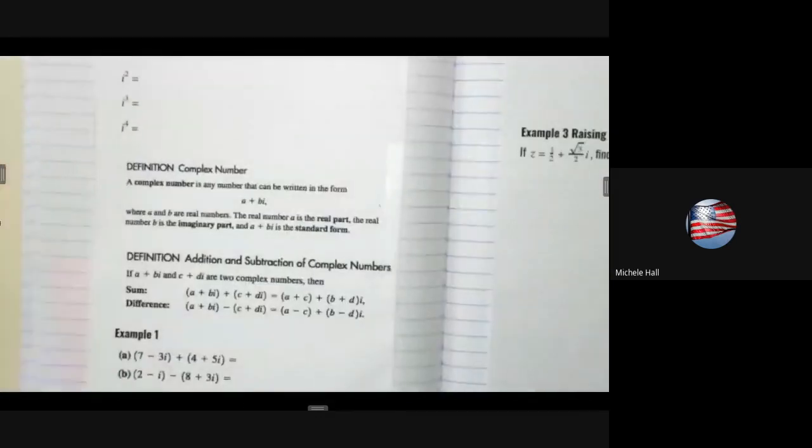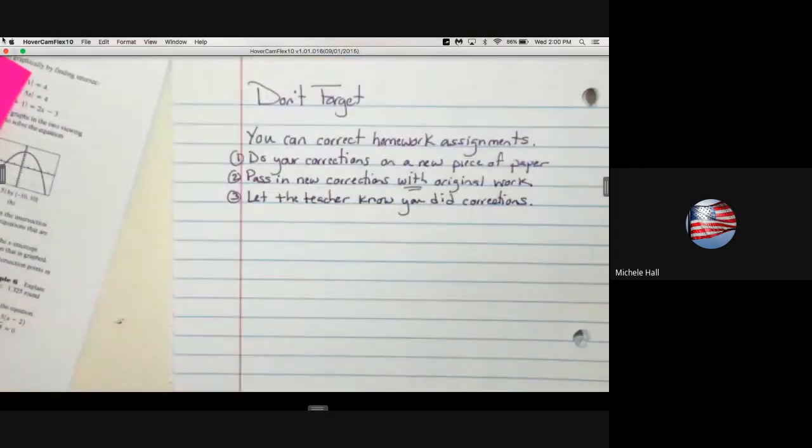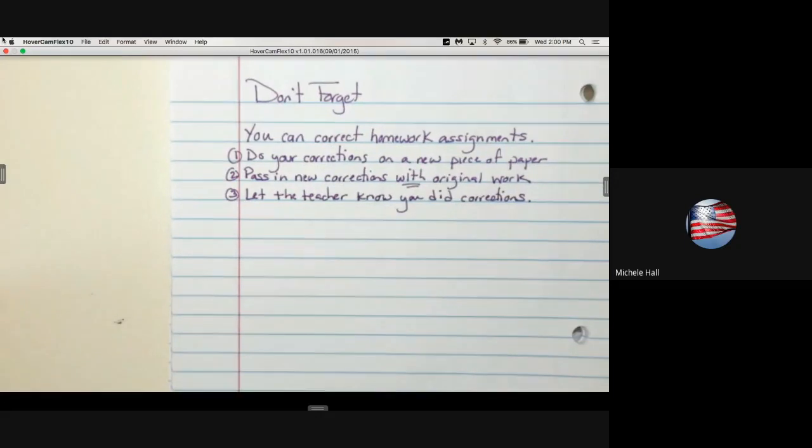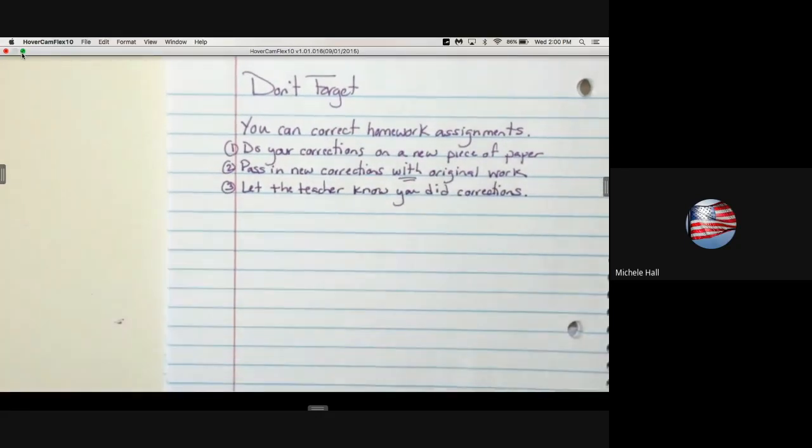Let's look at some more homework problems. Don't forget that you can correct your homework assignments. What you need to do is do your corrections on a new piece of paper. Pass in the new corrections with the original work. Please don't erase any work that you've done. Leave the original work so I can look back at it, or you can look back and see what your mistakes were. Then you need to let me know that you've done corrections. You can email me and I will take a look at it.